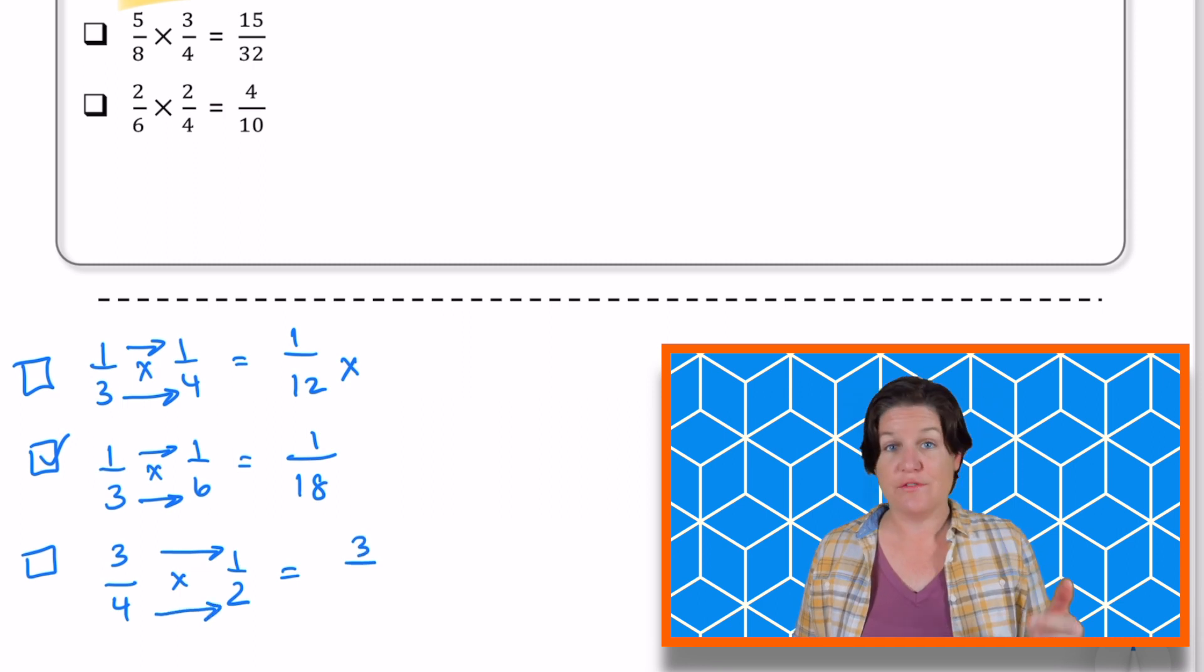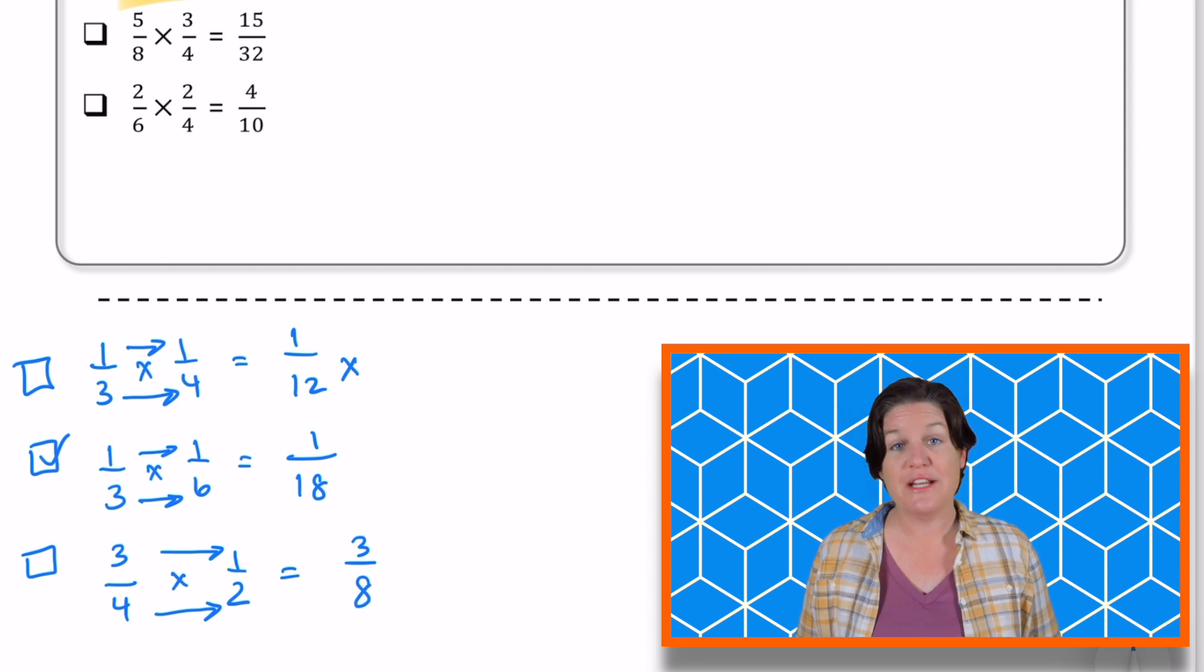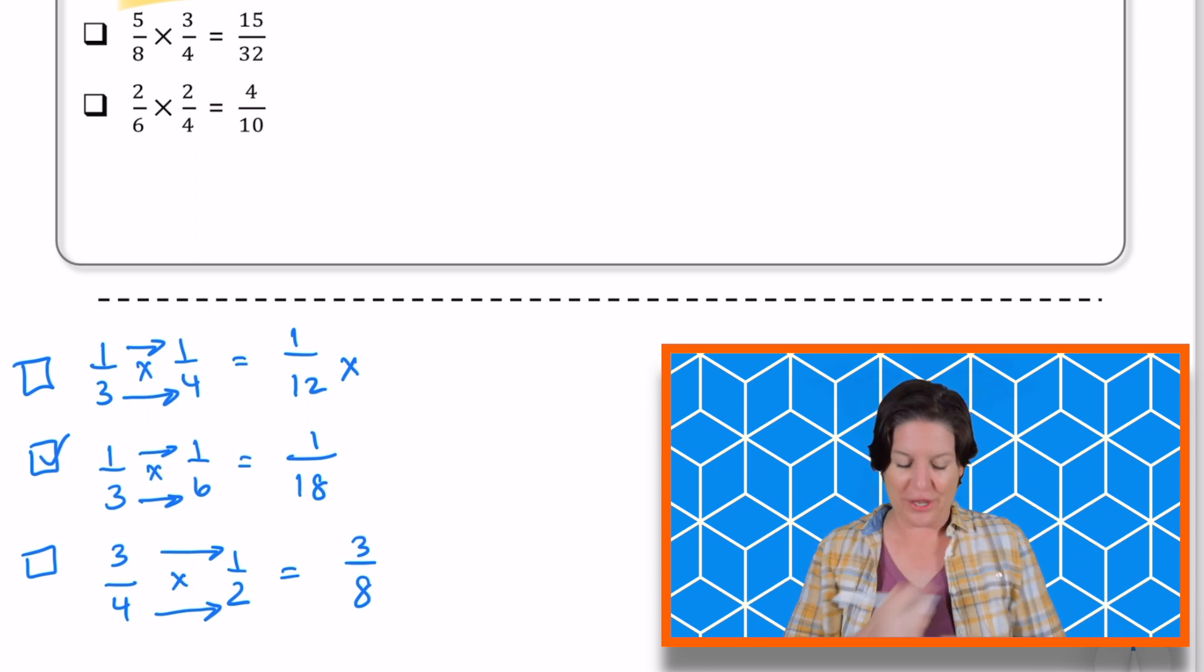Multiply the denominators, four times two equals eight. It would be three eighths and it is not four sixths. So we can go ahead and eliminate that one.